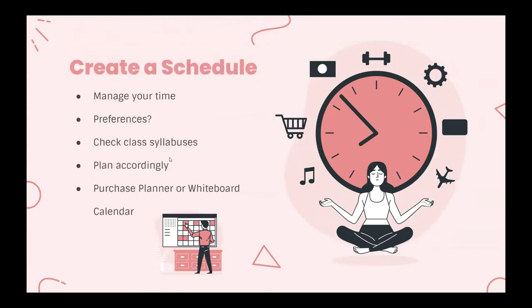Creating a schedule is one of the most crucial steps you can take to help manage your time. Figure out what you prefer — do you prefer only listing important dates like exams, or do you prefer jotting down every single detail planned out? Check your class syllabus to see when assignments will be due. Plan accordingly based on your availability — like if you have a job, you have to figure out how to get your assignments done at the same time. I suggest purchasing a planner or a whiteboard calendar so you can create your schedule in front of you rather than in your head, which creates organization.